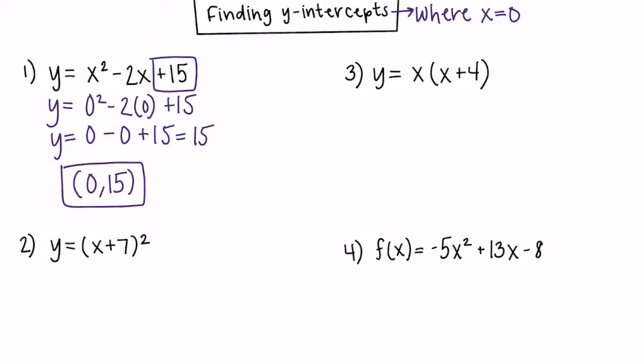Number 2 is not in standard form, so we can't just take the constant. We're going to have to plug in. We know to be a y-intercept, x has to be 0. So I replaced my x with 0 and now we're going to solve to figure out what y would be. We get 0 plus 7 is 7, squared would get us 49.